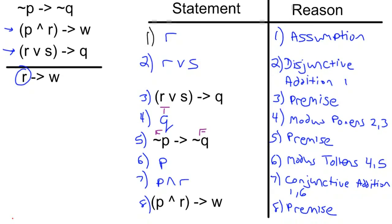And then we're going to continue on. After we have that statement, now we go to 9. Between statements 7 and 8, what can we conclude? Now we can conclude W. The reason for this is our modus ponens from lines 7 and 8.